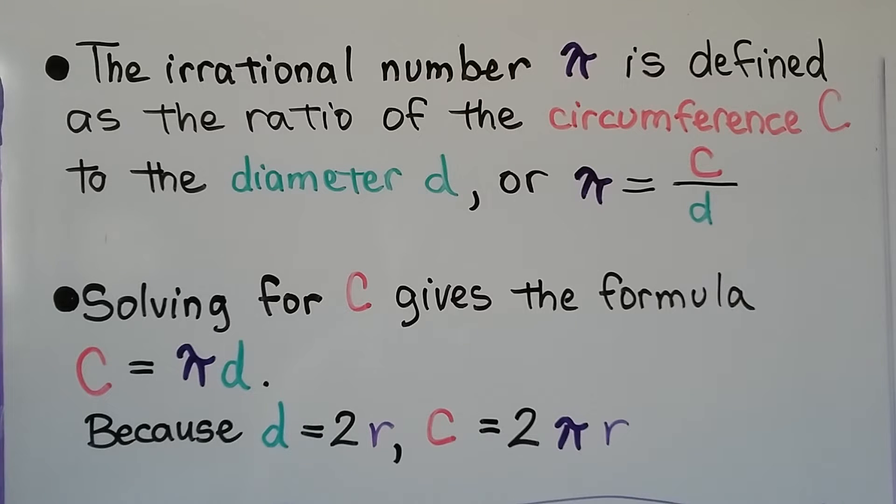The irrational number pi is defined as the ratio of the circumference C to the diameter D, or pi equals C over D. Solving for C gives the formula C equals pi times the diameter. Because the diameter equals 2 radii, we can also say C equals 2 pi r. It doesn't matter what order we multiply in, but you'll usually see it like this.